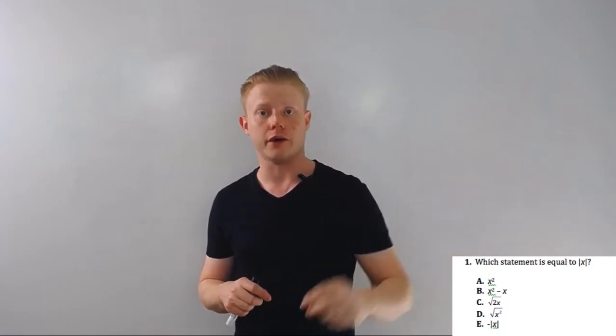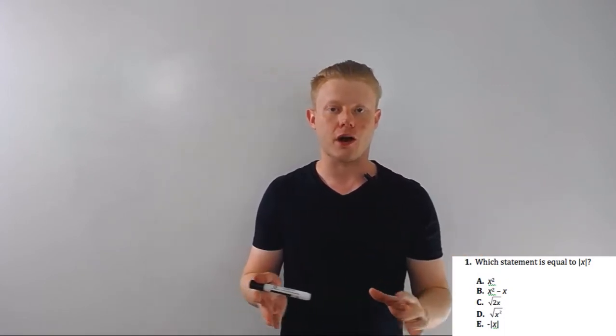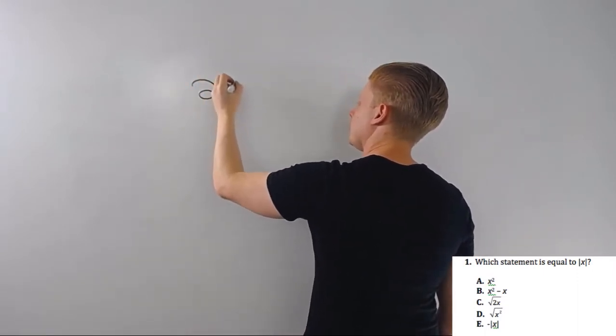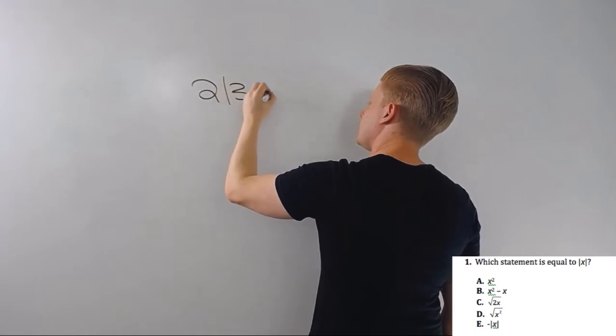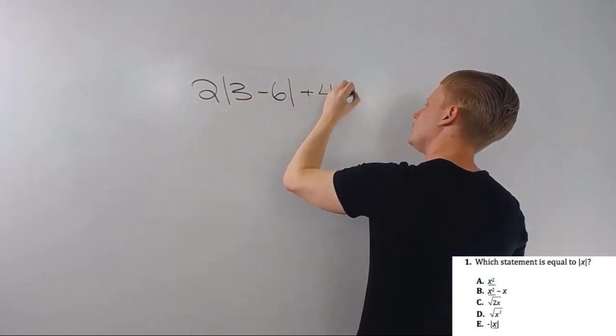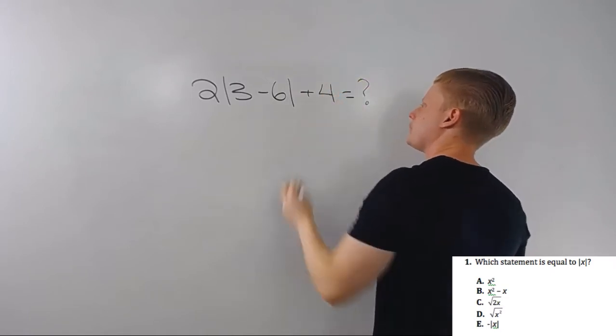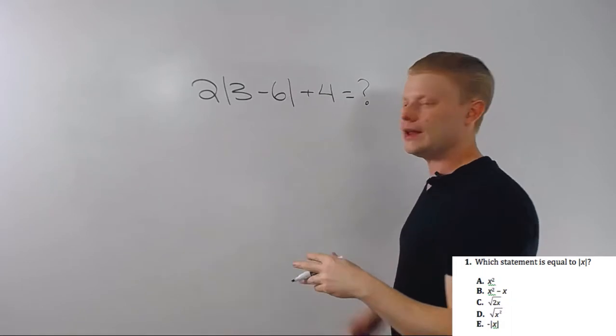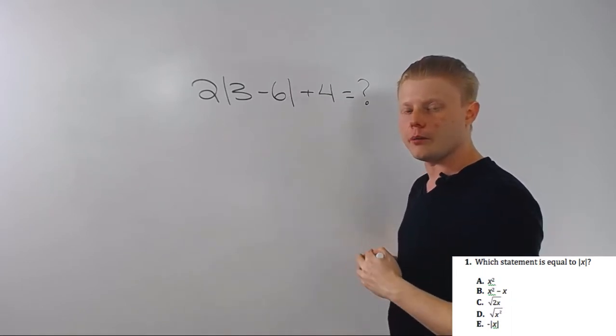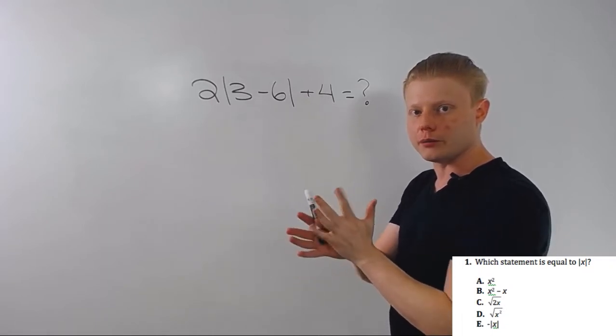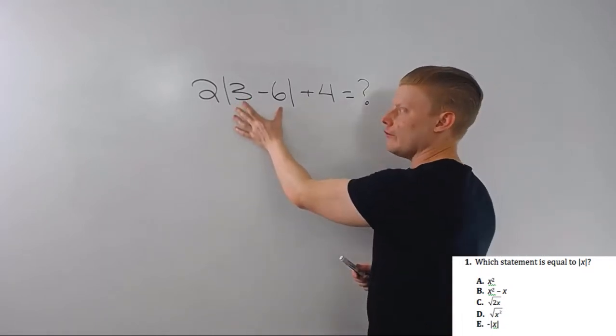Let's talk about the operations first. We kind of treat absolute value just like we would parentheses. Let's just make up an example here. Just like parentheses, we're going to resolve the inside as much as we can first. It's easy to forget that because we spend so much time dealing with algebra and parentheses that can't really be simplified anymore, but we can obviously do this operation.